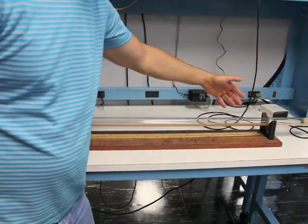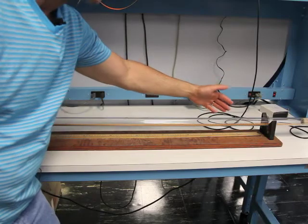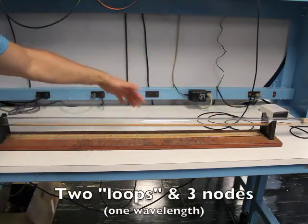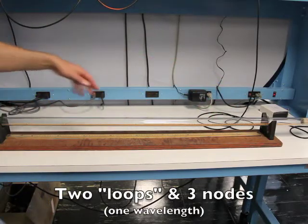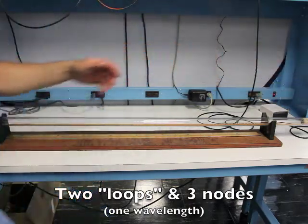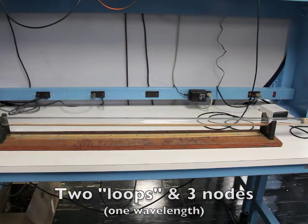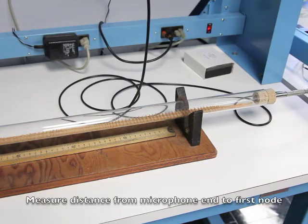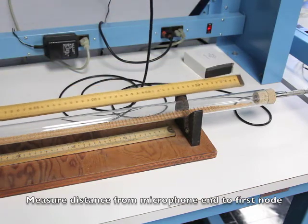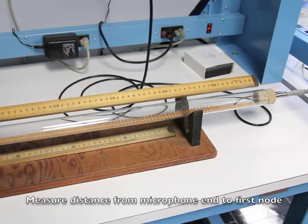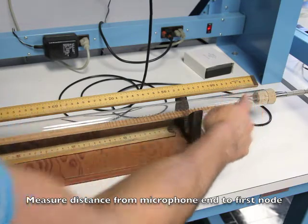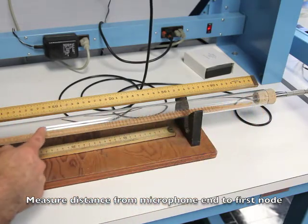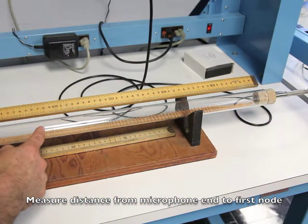This is like the waves on a string experiment where we have a loop, a node, a loop, a node, and of course a node over here. So that corresponds to one full wavelength. You'll measure the distance between nodes by measuring from the microphone end to wherever you think there's the least amount of agitation.